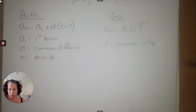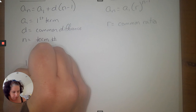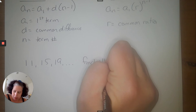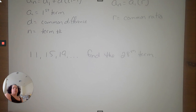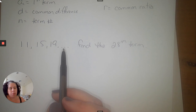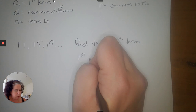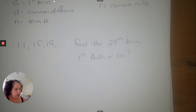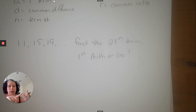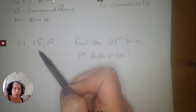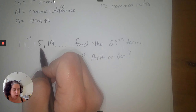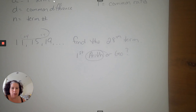If I give you the sequence 11, 15, 19 and ask you to find the 28th term, you could count out the difference all the way, but that takes too long for say the 50th term. So let's use the formula as a shortcut. First, figure out if it's arithmetic or geometric. Arithmetic changes by addition or subtraction; geometric changes by multiplication. From 11 to 15 is plus 4, and from 15 to 19 is also plus 4 — so this is arithmetic.